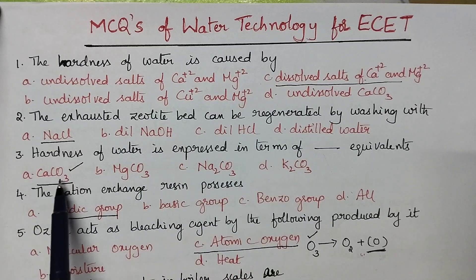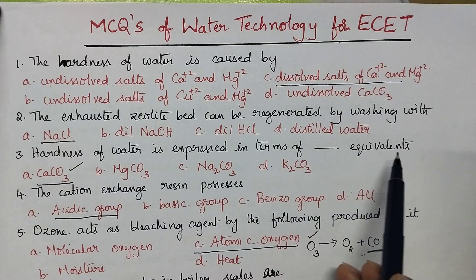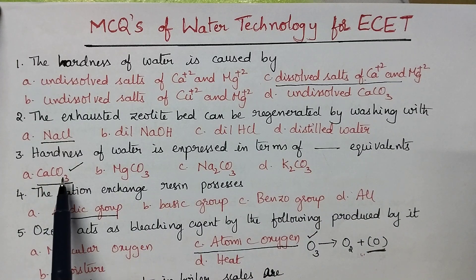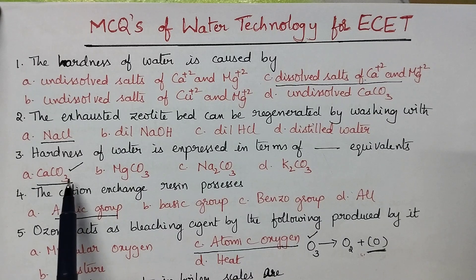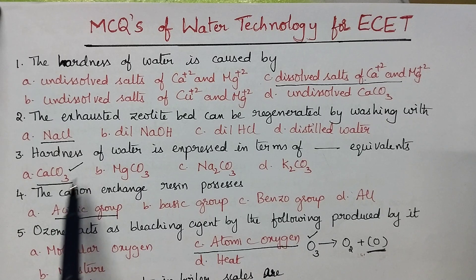Hardness of water is expressed in terms of calcium carbonate equivalents, since calcium carbonate is the most insoluble salt in water and its molecular weight is 100, which makes calculations easy.